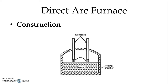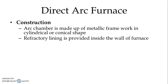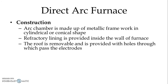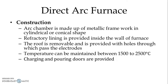We can see the direct type of Arc Furnace in the figure. We have two electrodes for single phase. We have a heating chamber and charge is filled in the furnace. The arc chamber is made up of a metallic framework in cylindrical or conical shape. Refractory lining is provided inside the wall of the furnace. The roof is removable and is provided with holes through which electrodes can be passed. We use electrodes made from carbon or graphite, and electrodes are replaceable.